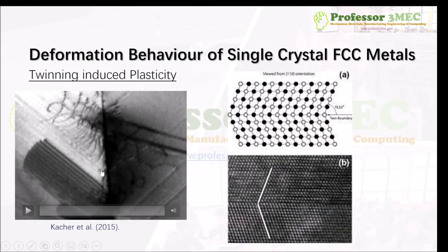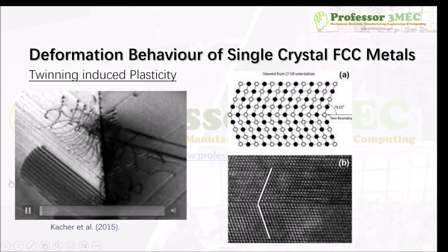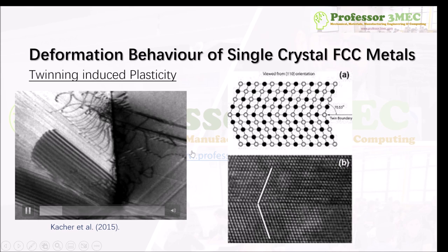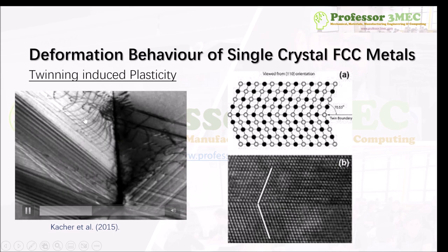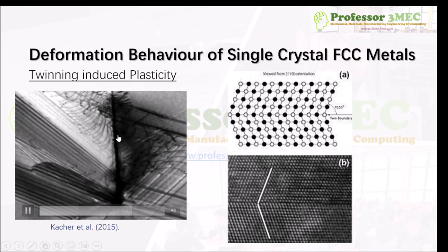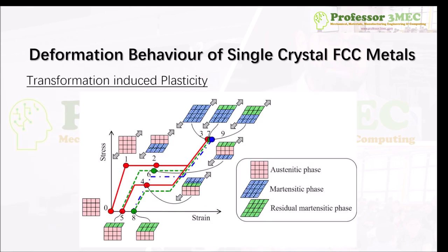The second mechanism is twinning-induced plasticity. Instead of dislocations slipping along a specific plane in a specific direction, the crystal twins and forms a mirror image about a twin boundary. In TEM images you can monitor how twins form about that boundary, with many slip systems also getting activated and dislocations moving toward and interacting with the twin boundary — making plasticity at the micro scale a very complex phenomenon.